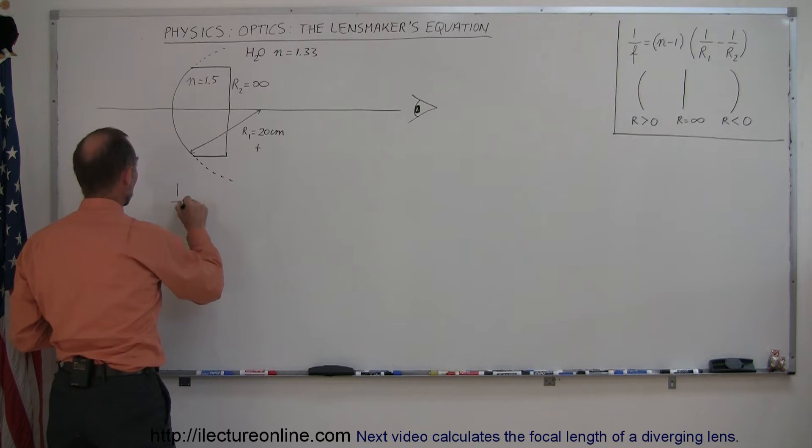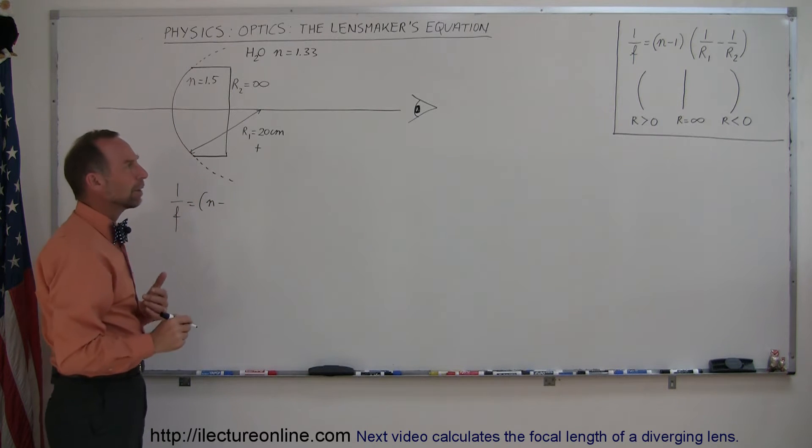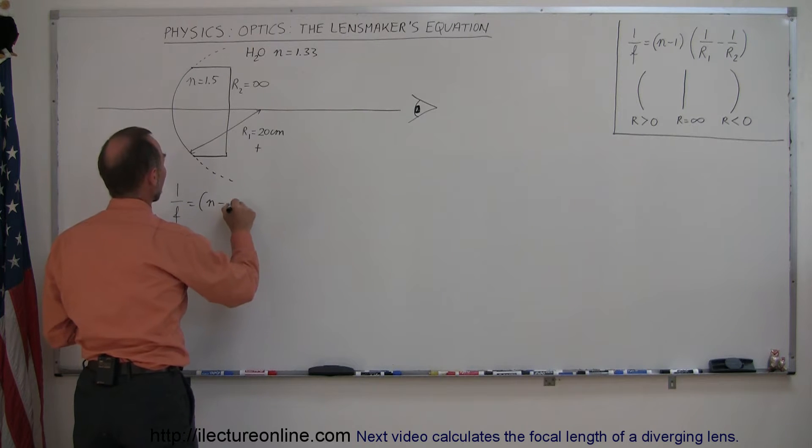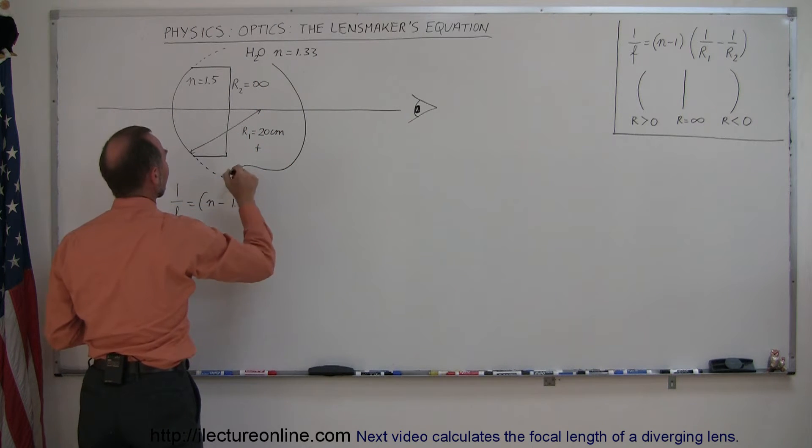Again, we use the same equation. 1 over f equals n minus... Now we can't write n minus 1 because it is not 1 on the outside. We have to write n minus 1.33. This is the index of refraction of the medium outside the lens.